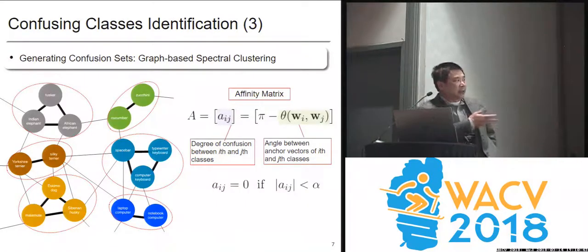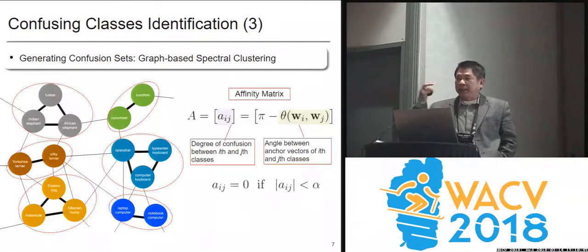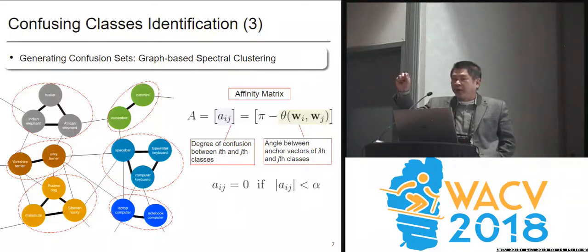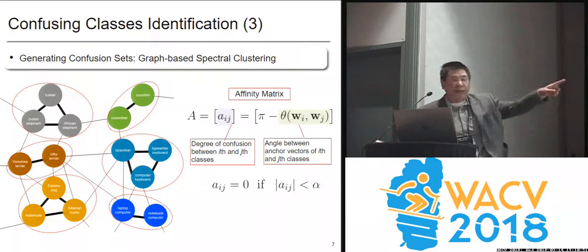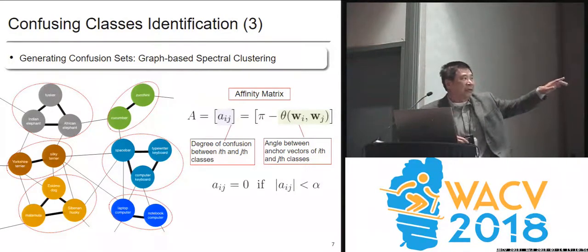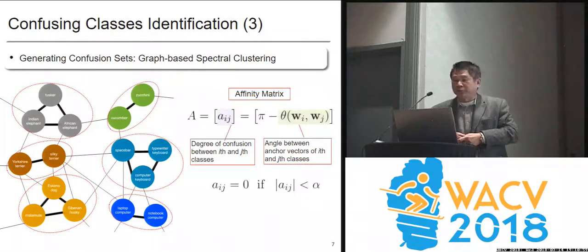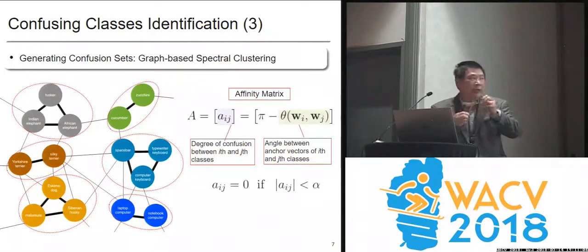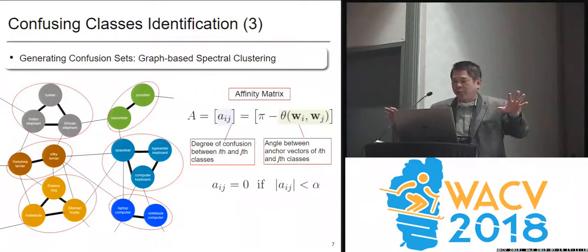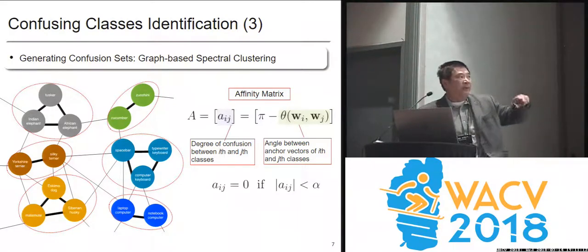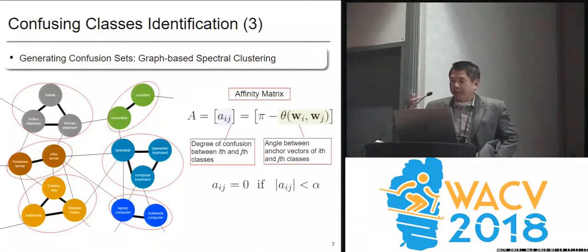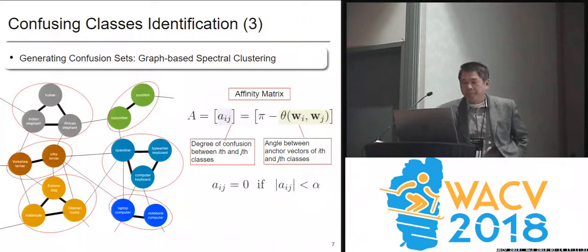We can build a sort of graph where each node is a class. If the node has a very small angle, that means it's a highly confusing class — we use a thick edge link to denote that, and a smaller one for weaker confusion. Then we form a so-called affinity matrix. A larger value means strong correlation and confusion, while a smaller number means there is no confusion — they are weakly correlated. We form the affinity matrix, then do spectral clustering and cut the graph into subsets. That's the confusion class we can identify.